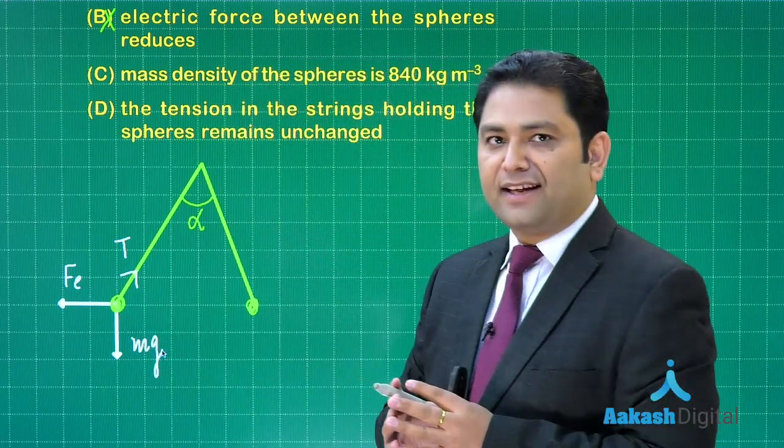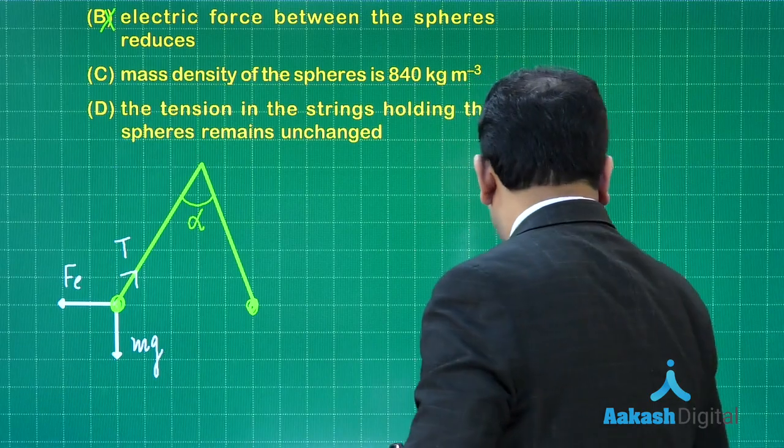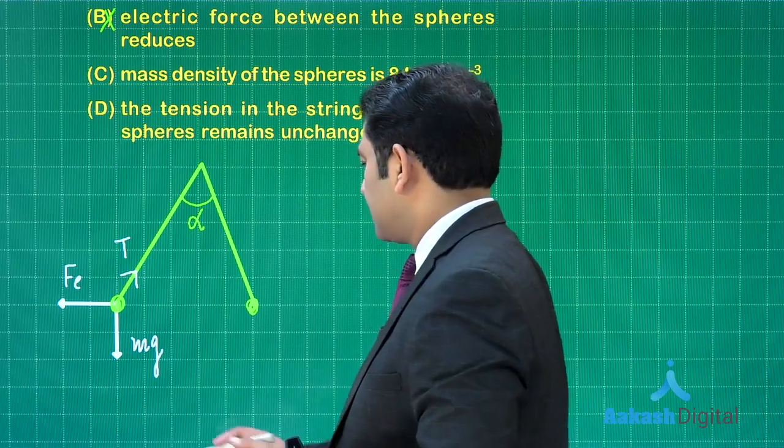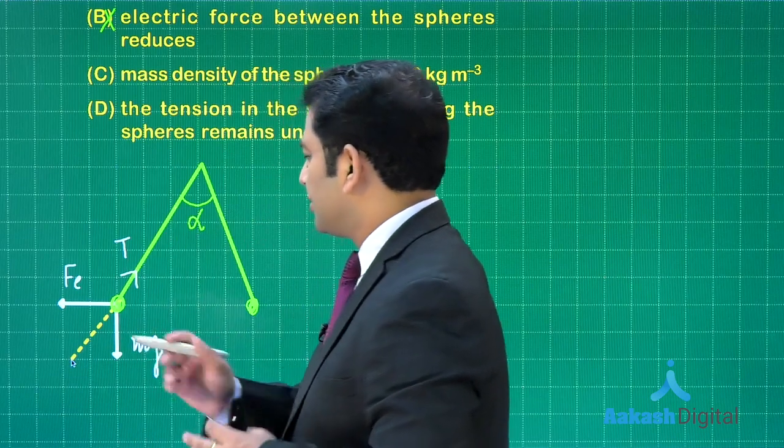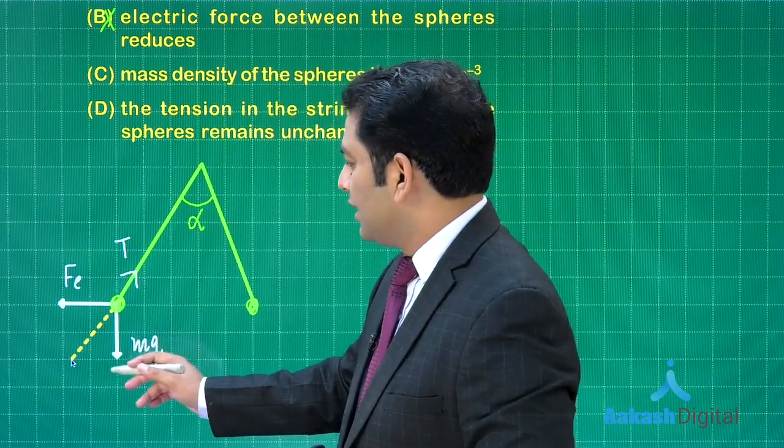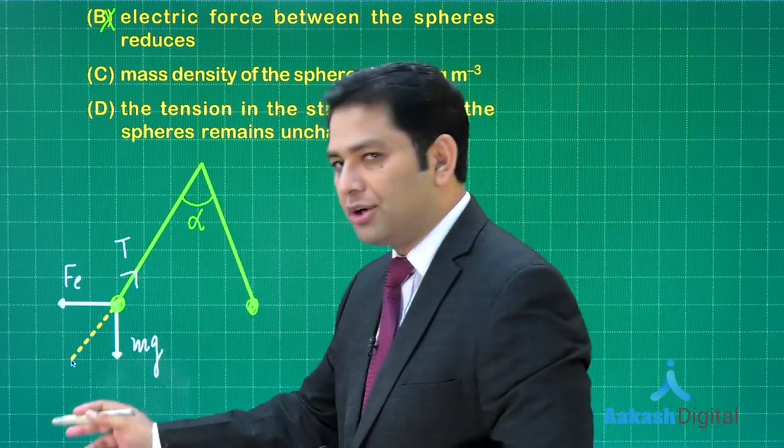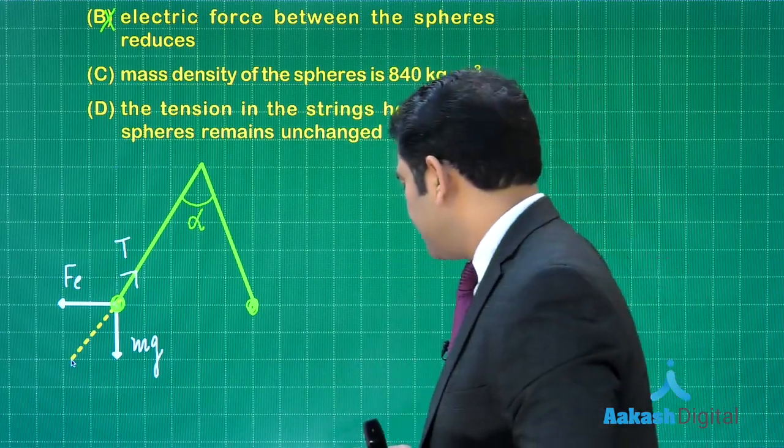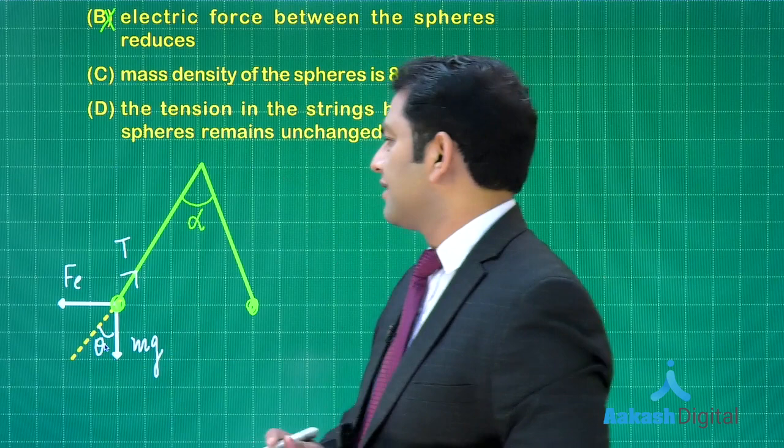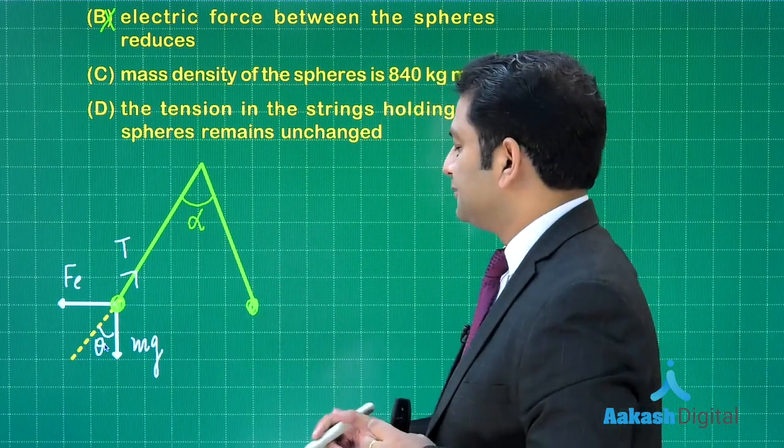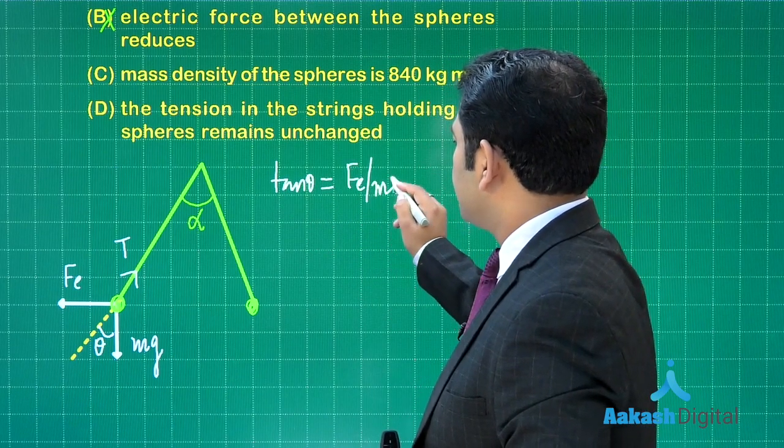Upon insertion in liquid, the angle remains the same. If I want to find the net force, the resultant of Fe and mg has to be exactly in the line opposite to the tension so that the resultant will be balancing in terms of both magnitude and direction. This angle is alpha by 2, so let me call it theta.